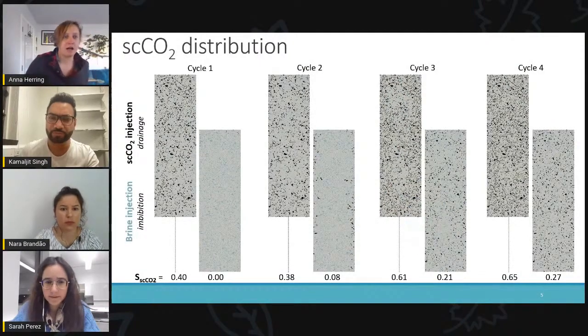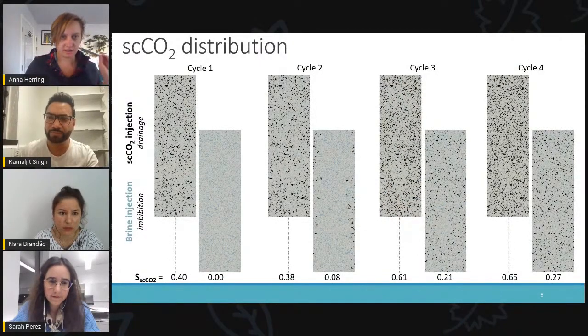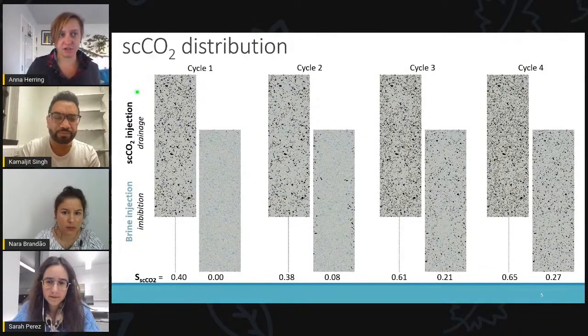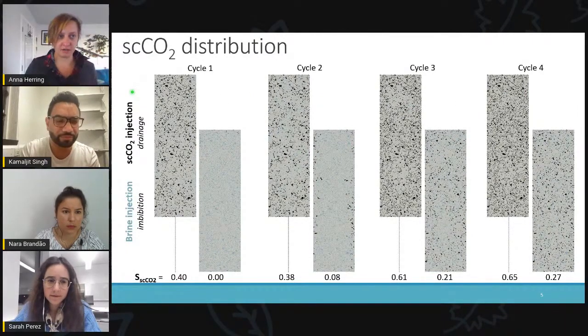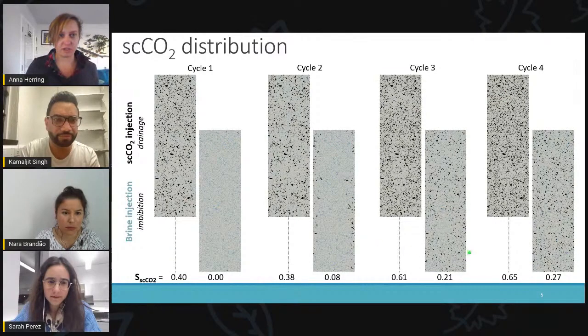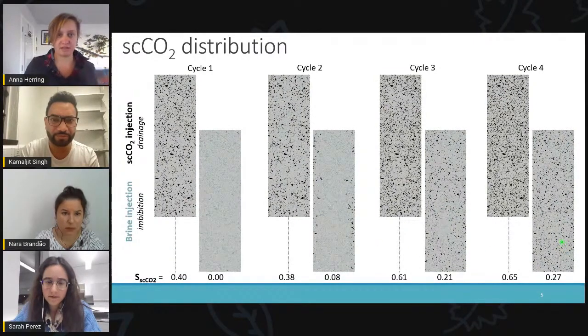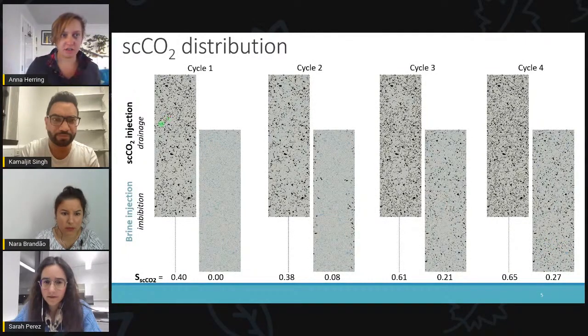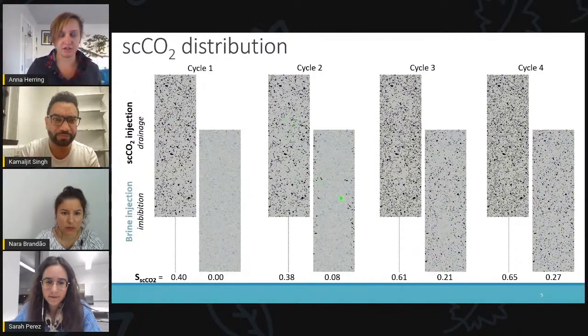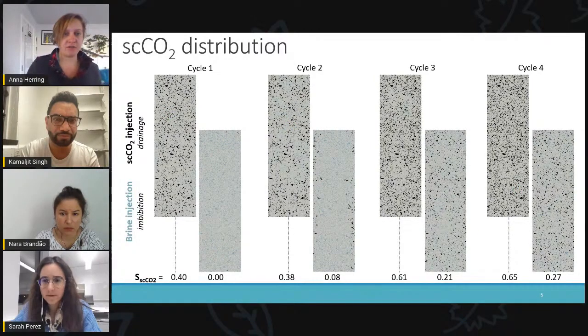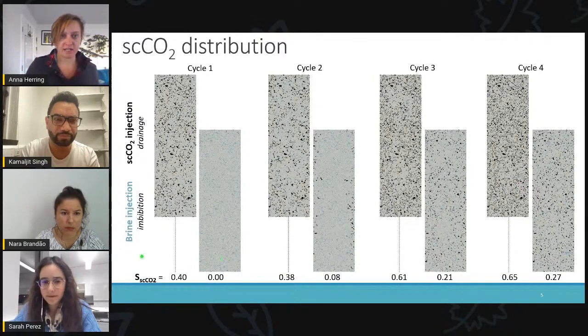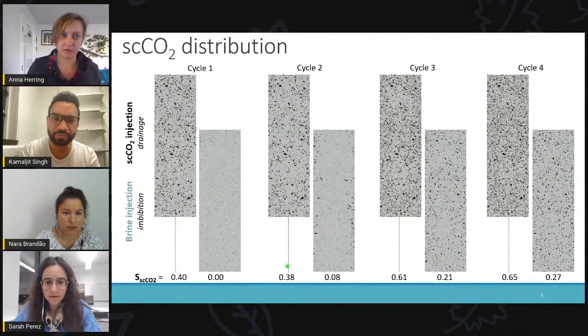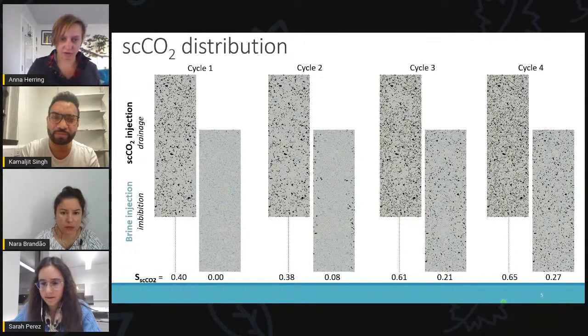Okay, so here are some of the results. These are two dimensional slices from the center of the core. The top row is the phase distribution after the CO2 injection. So that's after drainage, also called the initial state. The bottom row is the phase distribution after brine injection. So that's after imbibition, and that's also called the residual state. So the sequence of experiment went CO2 injection, then brine injection, CO2 injection, brine injection, so on. I have noted the image-based CO2 saturation for each scan at the bottom of the slide.